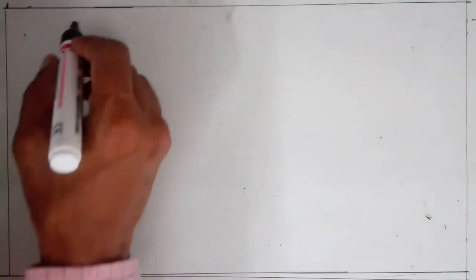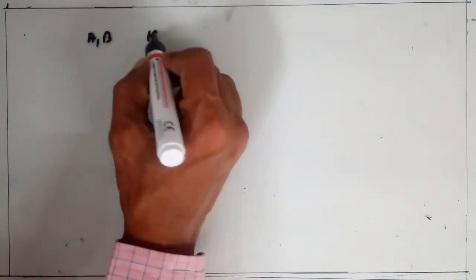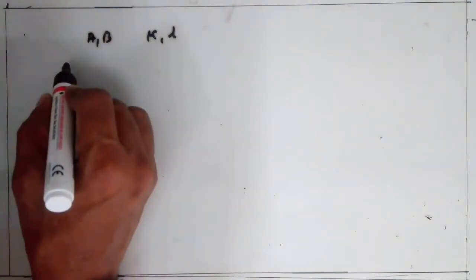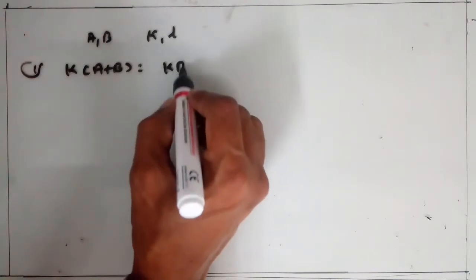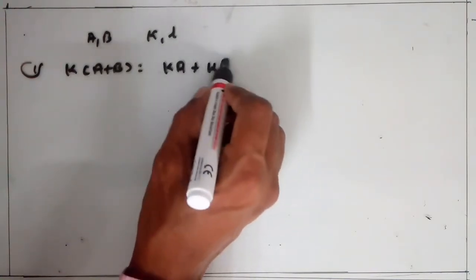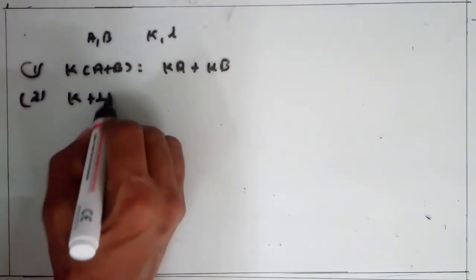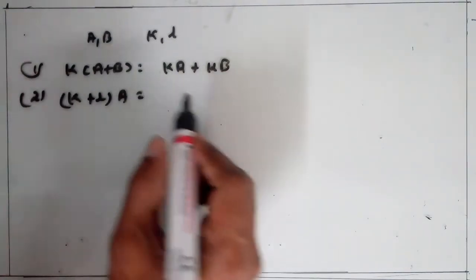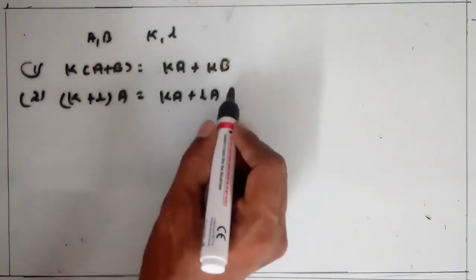Now, properties of scalar multiplication of a matrix. For matrices A, B and scalars k, l, remember: k into (A plus B) is equal to kA plus kB — taking k inside. And (k plus l) into A is equal to kA plus lA — taking A inside.